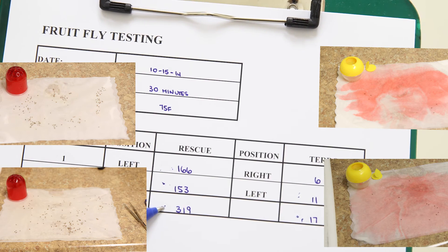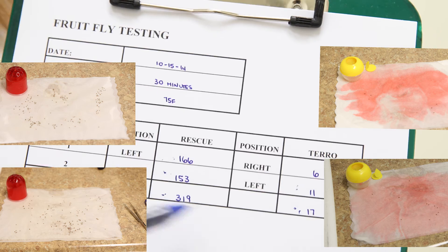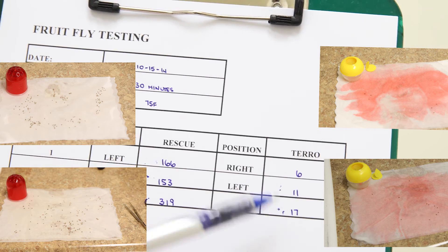Giving us a total of 319 fruit flies in the RESCU trap versus 17 fruit flies in the Taro trap, showing that the RESCU trap is superior to the Taro trap.